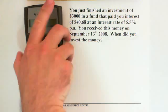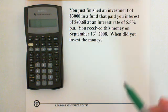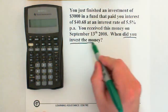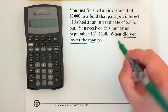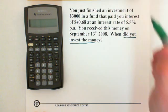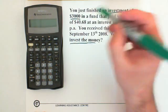You have just finished an investment of $3,000 in a fund that paid you an interest of $40.68 at an interest rate of 5.5% per annum. You received this money on September 13th of 2008. When did you invest the money? So the question wants to know when did you invest the money, the start date. If we start at the top, it says you just finished an investment of $3,000, so this is our principal.